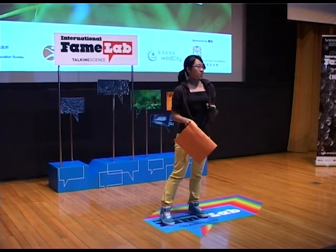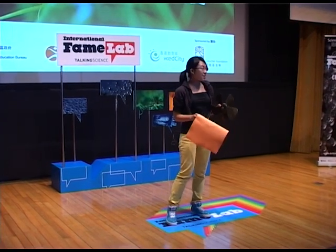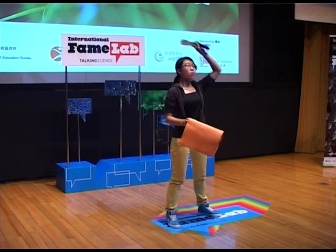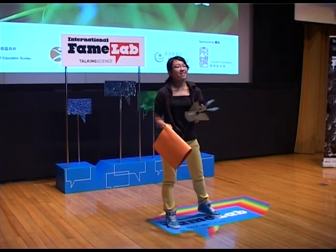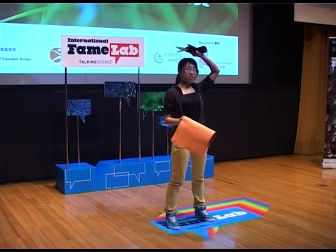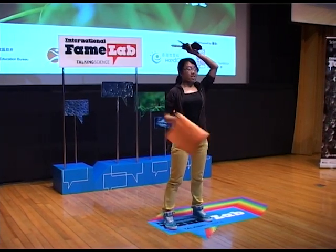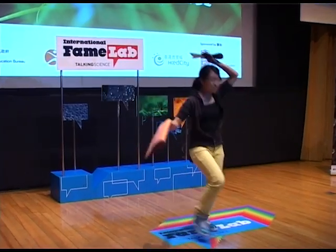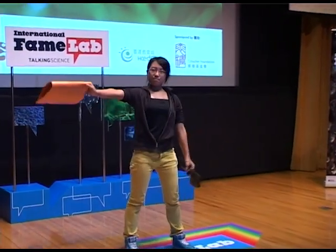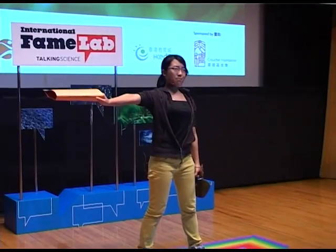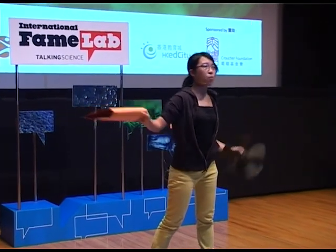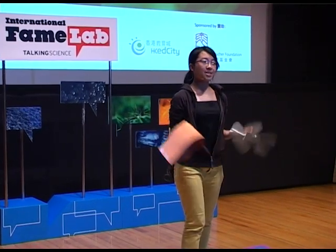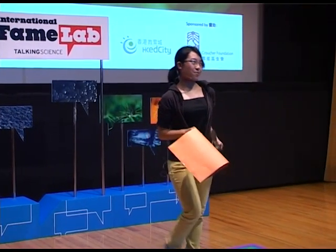One major difference between a helicopter and an airplane is that a helicopter can hover. What's hovering? It's staying in the air, keeping its altitude without necessarily moving forward. But a fixed-wing plane can't. Why? We have to know why they can bring us to the sky first.